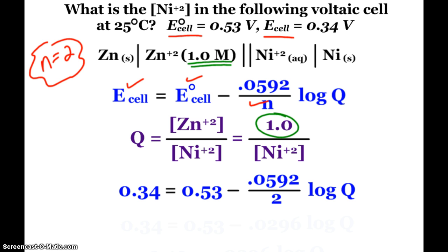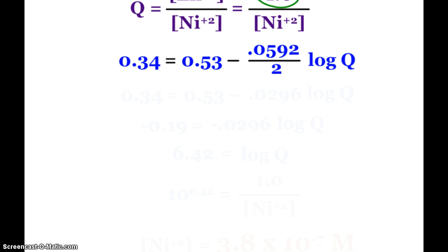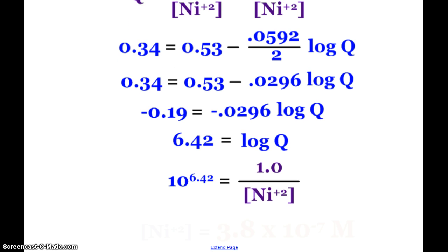So now that I know my Q expression, let's go ahead and find what it is mathematically. So I plug in my numbers, 0.34 for E_cell, 0.53 for E°_cell. Put the 2 in under the 0.0592. And then I start doing some cleaning. 0.0592 divided by 2 is 0.0296. Now I can subtract the 0.53 from both sides. So negative 0.19 equals negative 0.0296 log of Q. Divide, so I can just get log of Q by itself. So I end up with 6.42 equals log of Q. And so I'll take the anti-log of that, and that will be Q, which I saw up here is 1 over the concentration of nickel.